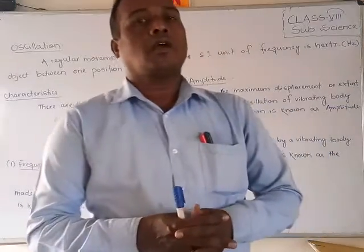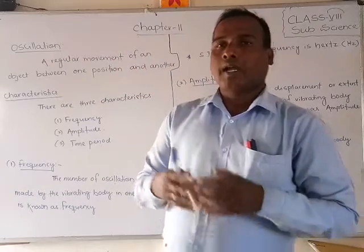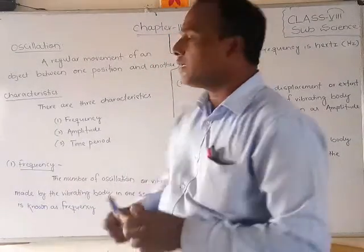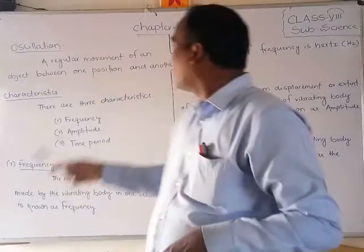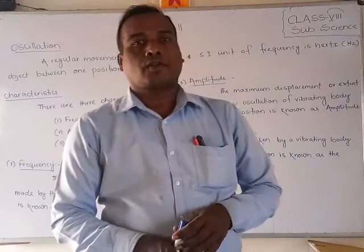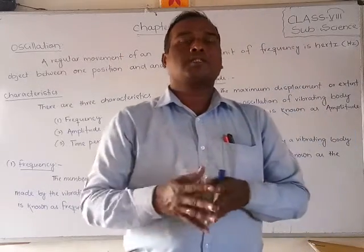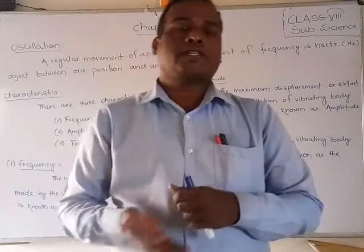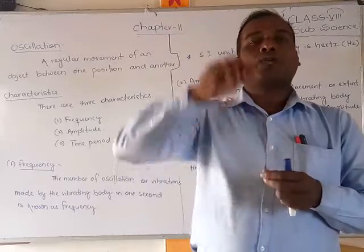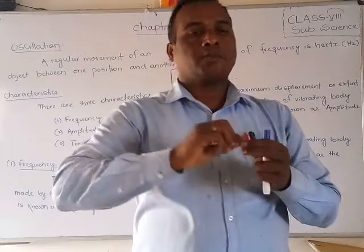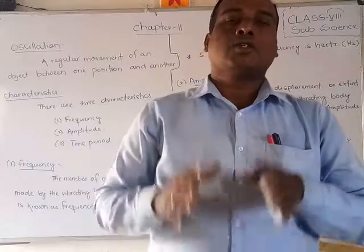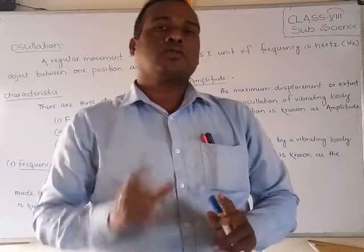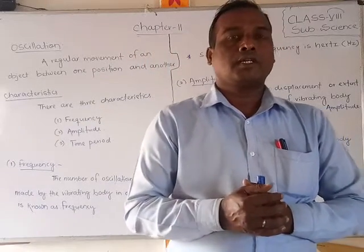So, what is oscillation? Oscillation is a regular movement of an object between one position to another position — that is called an oscillation. When an object vibrates, it moves from one position to another position. That regular movement, which has a time period, is called an oscillation.